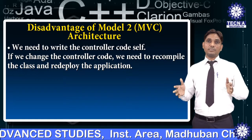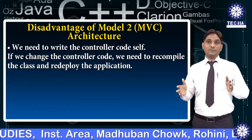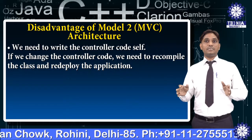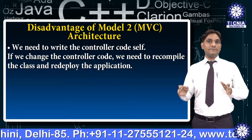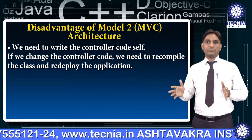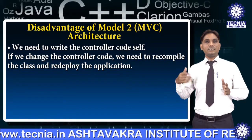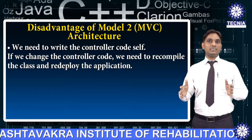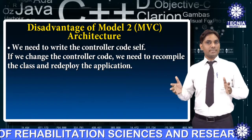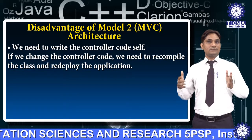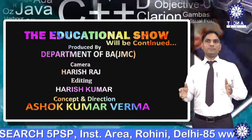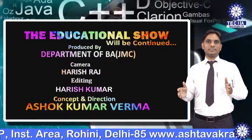So we have explained the two types of MBC models — Model 1 and Model 2. Both models work in an online environment. Without MBC architecture, we cannot access any web application. Servlet, JSP, JavaBean, and other technologies work based on MBC architecture, because MBC provides centralized navigation control, is easy to maintain, easy to extend, easy to test, and provides better separation of concern. So I hope you understand the topic of MBC-based architecture with its two models.